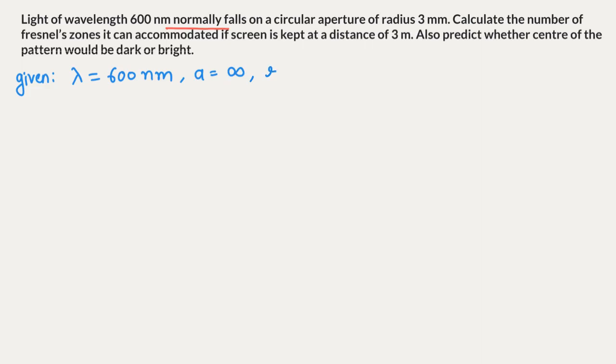Next, what is given: radius of aperture is 3 mm, and screen distance is 3 meters. What is asked: the number of zones, and whether the center would be dark or bright.